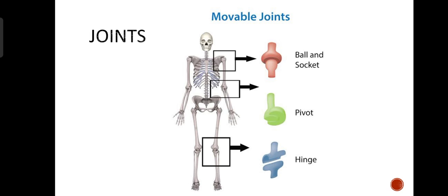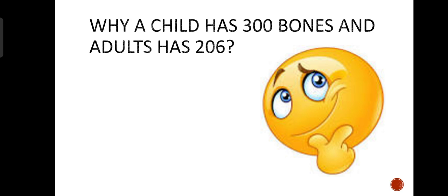Your skull protects your brain. And your lungs, liver, and heart are protected by the ribcage — your chest area is the ribcage, and that ribcage protects your lungs, liver, and heart.